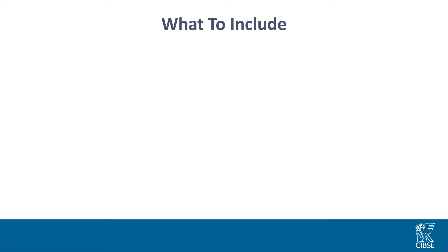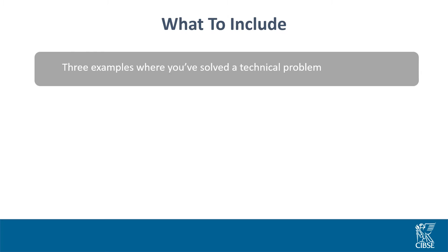I'll give a brief overview of what is required for the written report. You'll need to give three examples of where you solved a technical problem. Here you'll explain your role and how you selected the appropriate techniques, procedures and methods used, and how any findings or recommendations were made, your role in relation to your employer, any clients or suppliers, and what you did to ensure the safety of people, equipment or data.